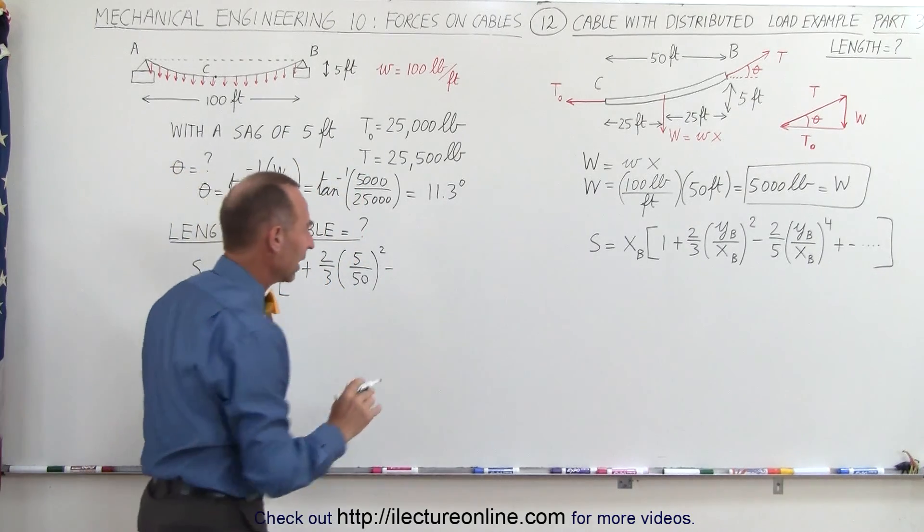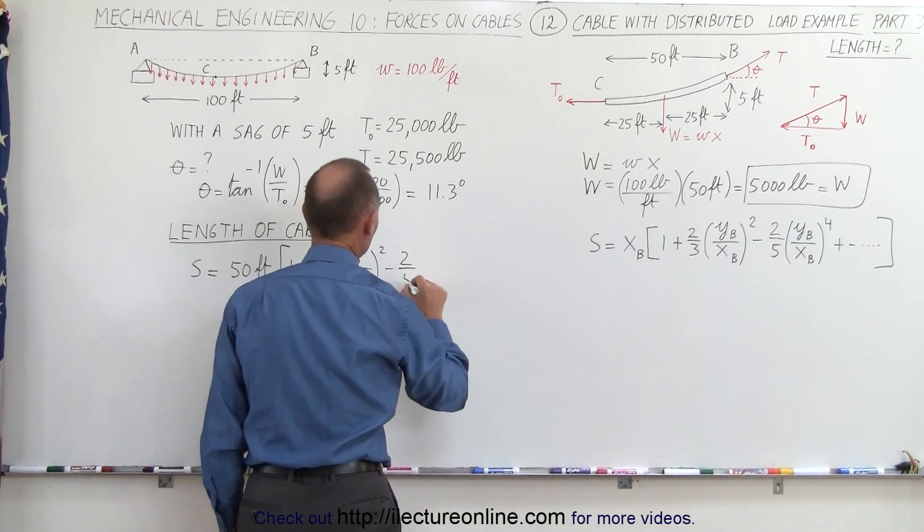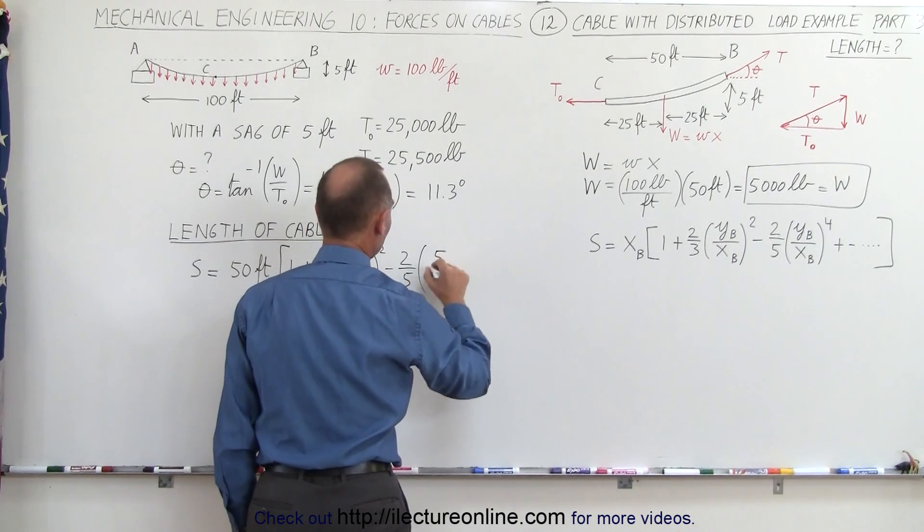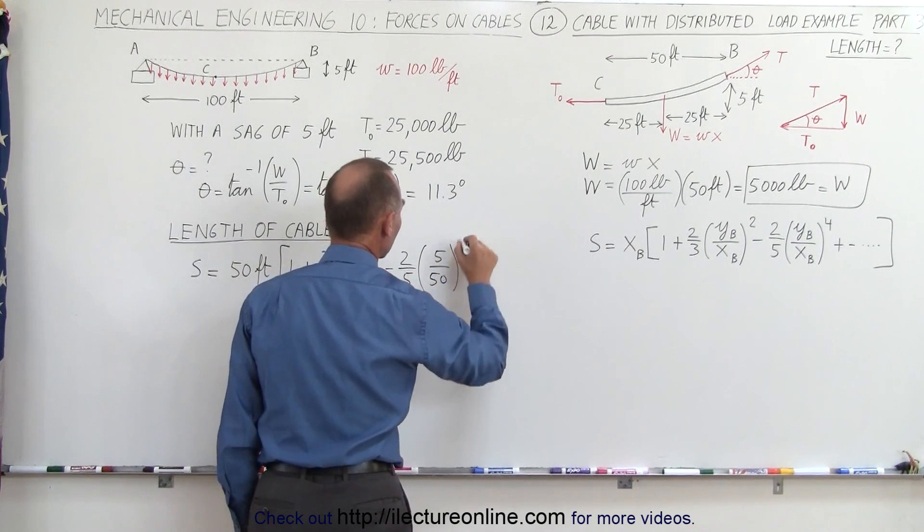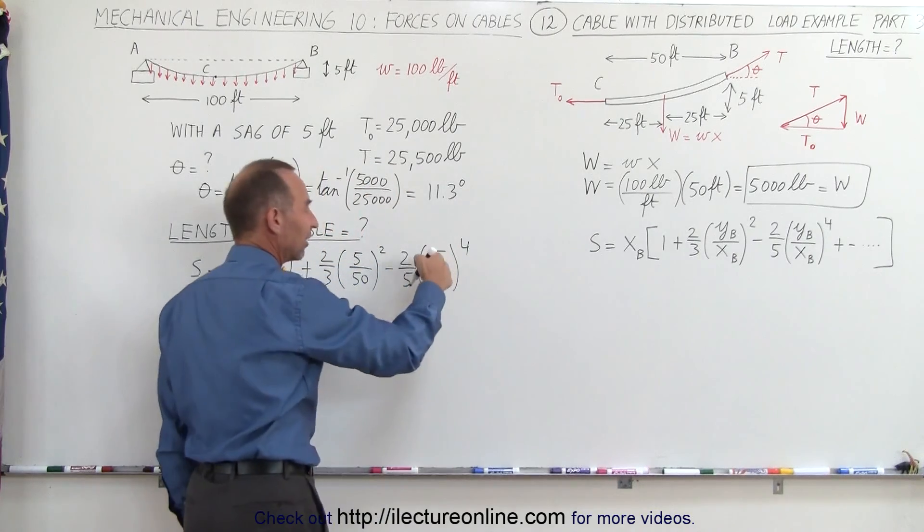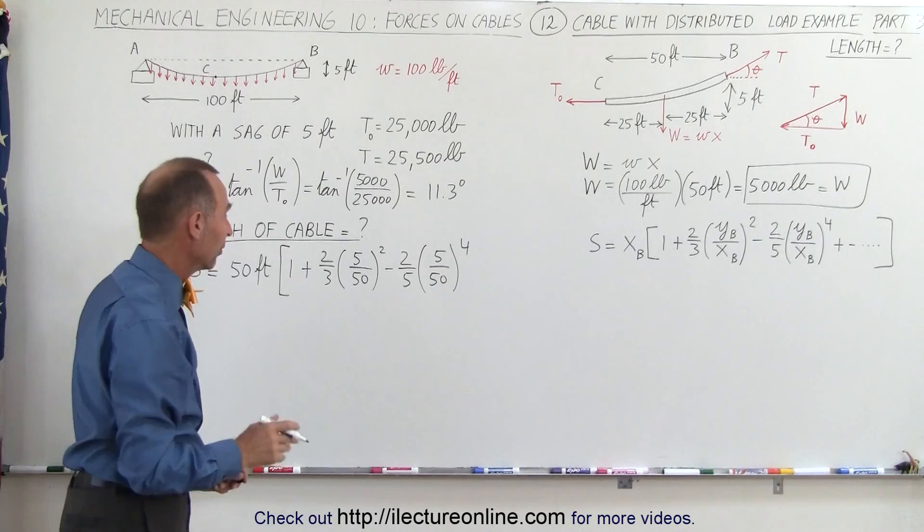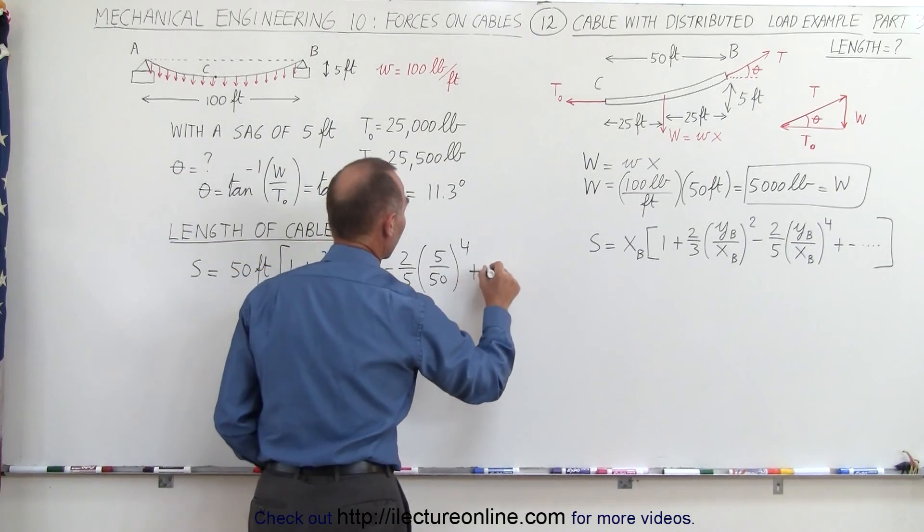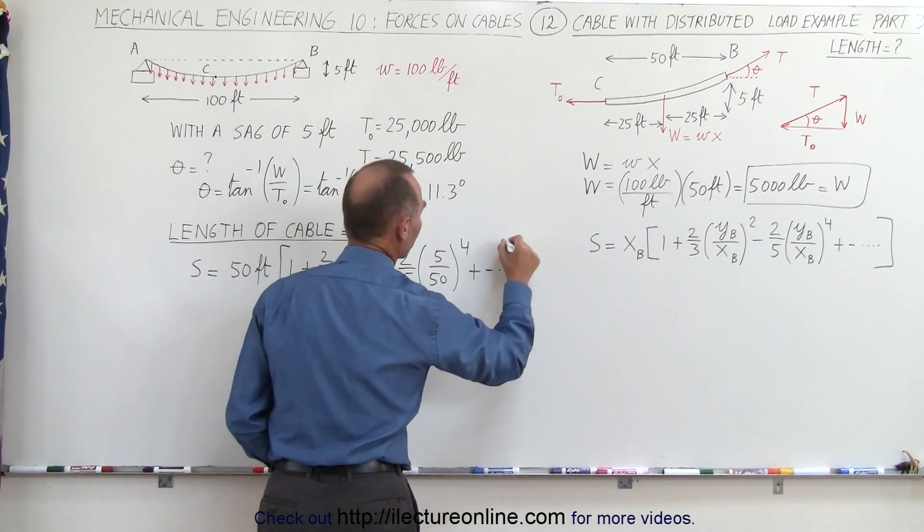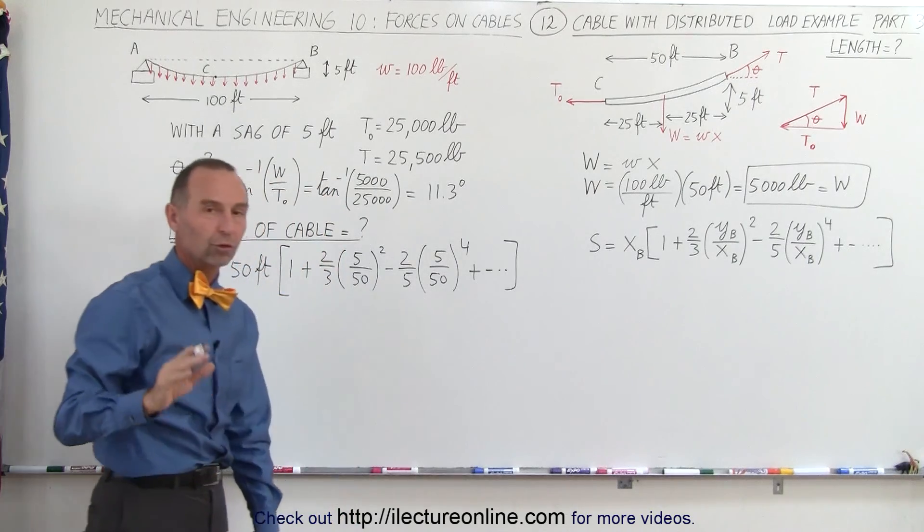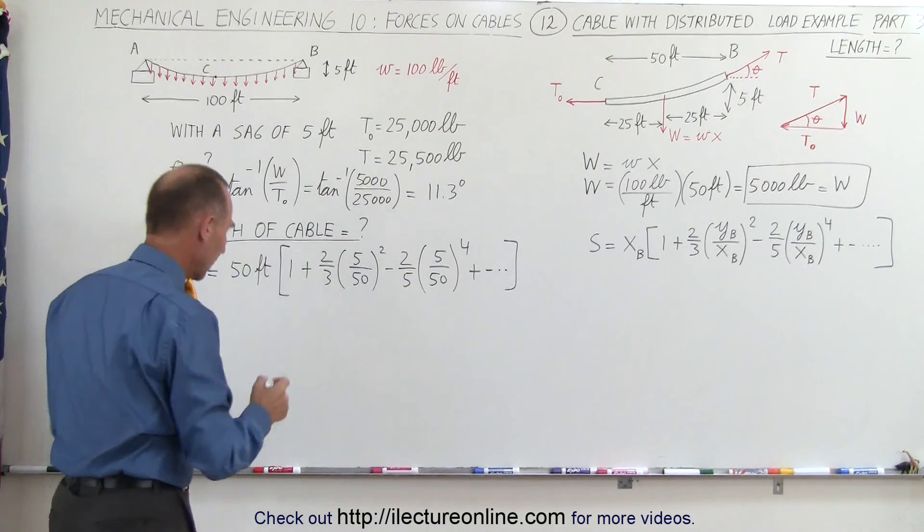You can see that it's probably not necessary, 2 fifths times the quantity. That would be 5 divided by 50 raised to the fourth power. So you see here that this is 1 tenth. 1 tenth raised to the fourth power is a very small number indeed. And of course there's additional terms, but we're simply going to ignore those. Those are so small that they really don't contribute anything meaningful.